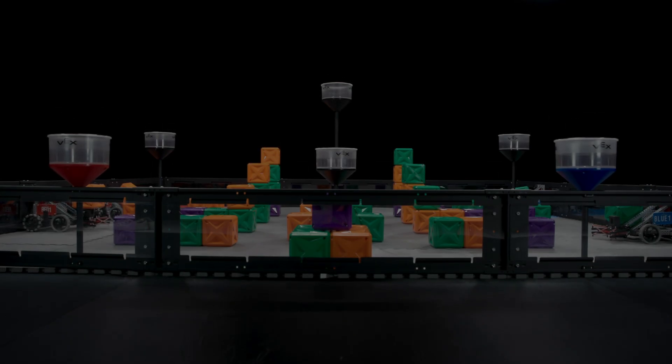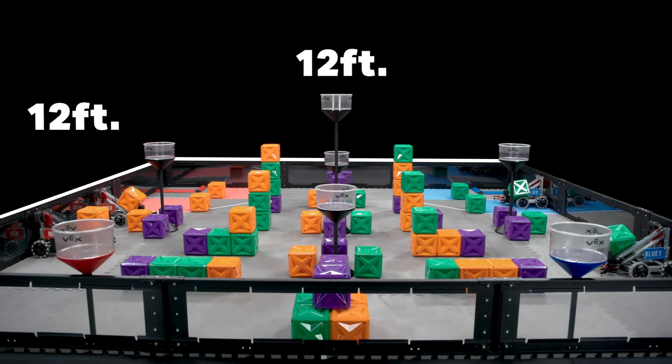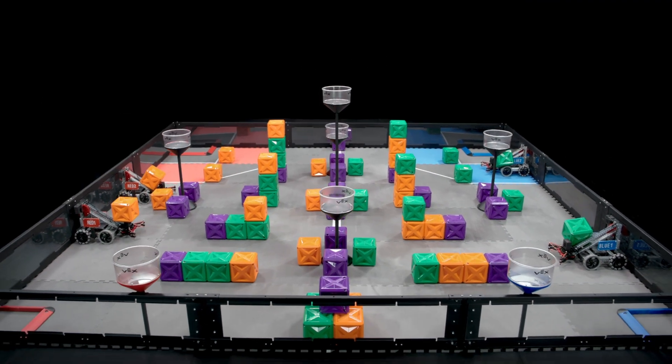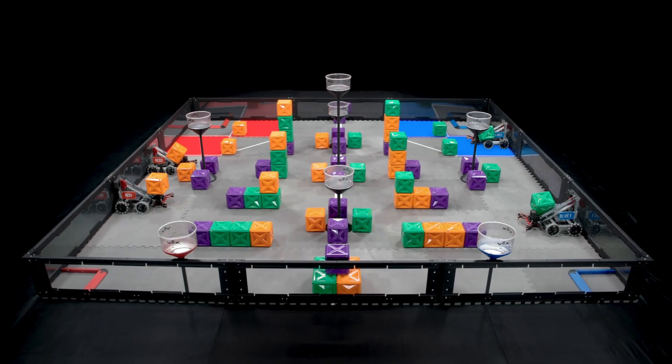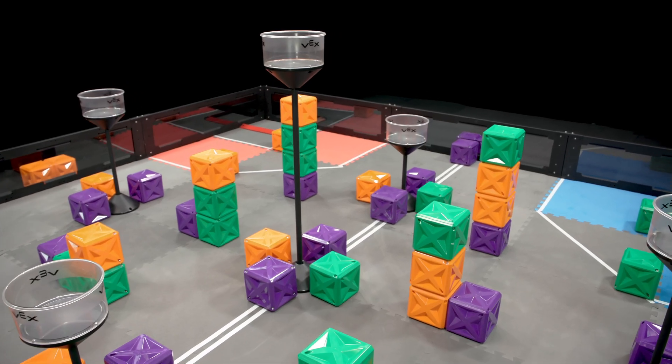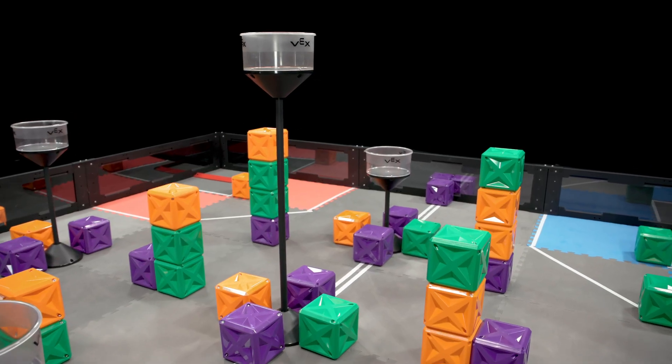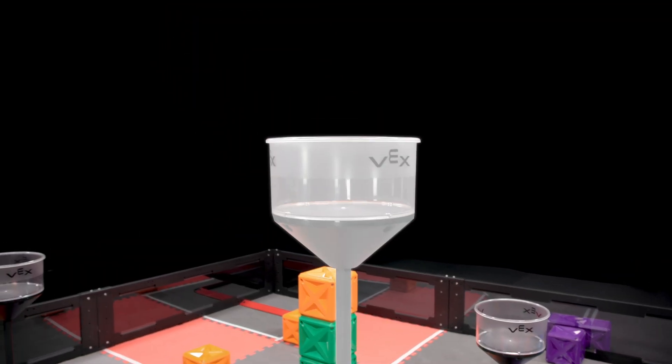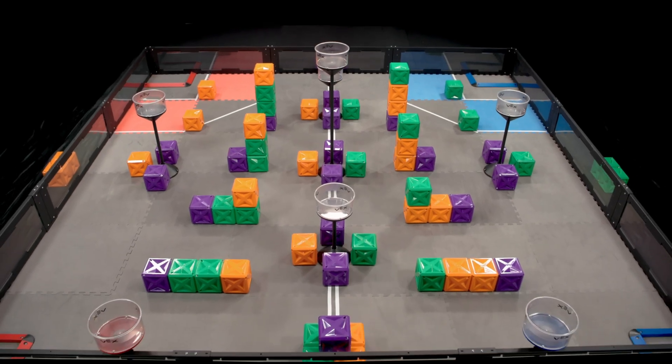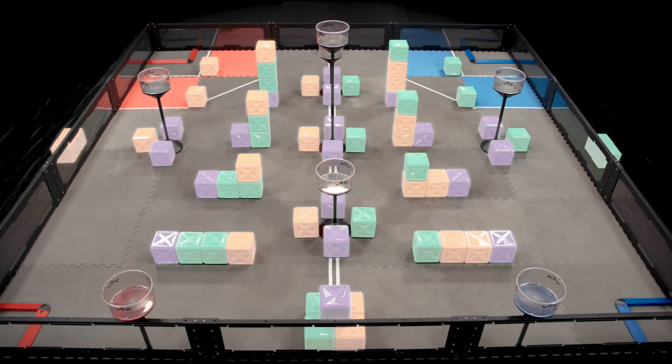Tower Takeover is played on a 12 foot by 12 foot field by two alliances, one red and one blue, made up of two teams each. The object of the game is to get more points than the other alliance by scoring cubes in goals and placing cubes in towers. The VRC Tower Takeover field contains 66 cubes.